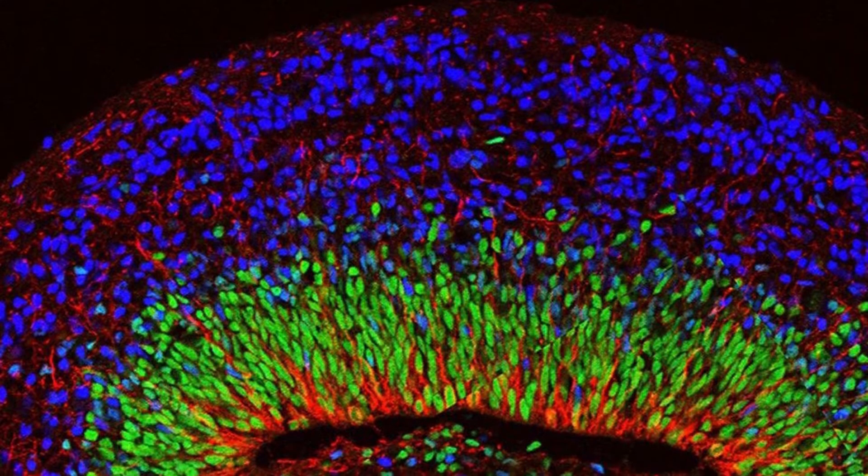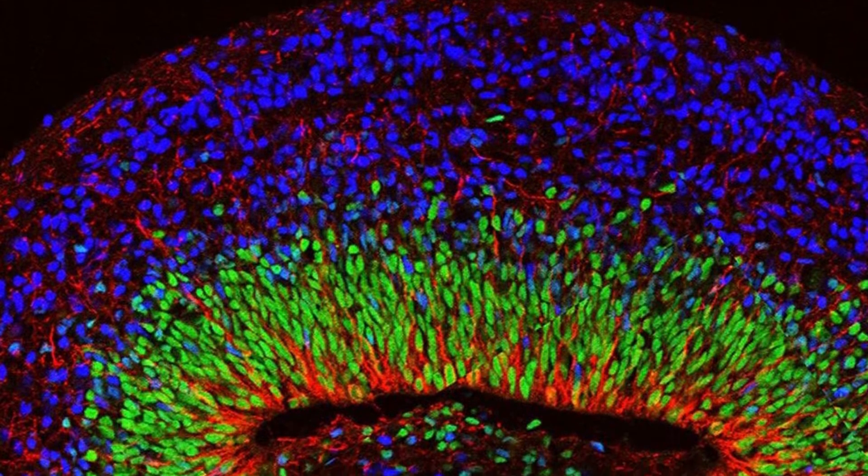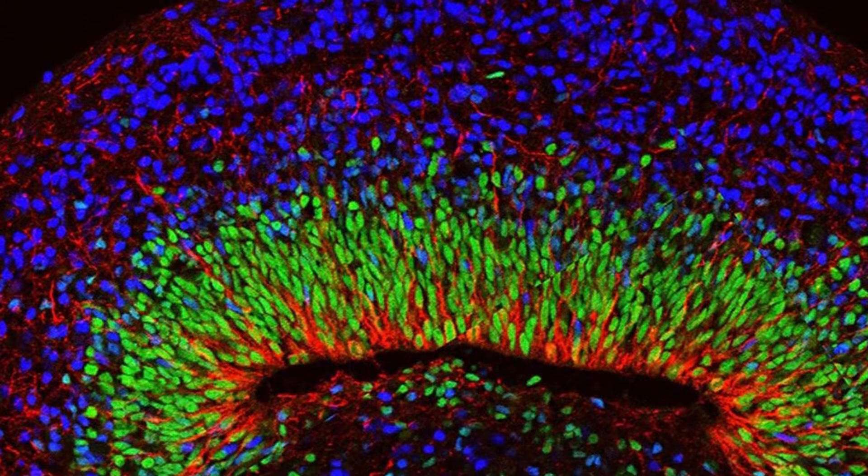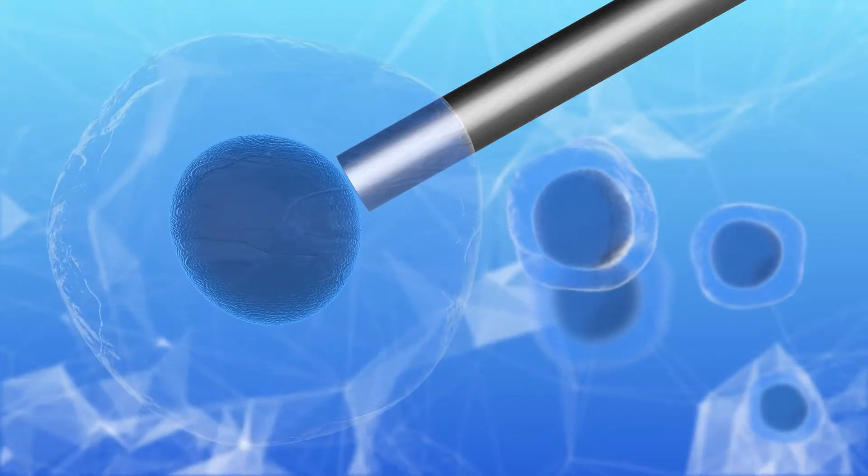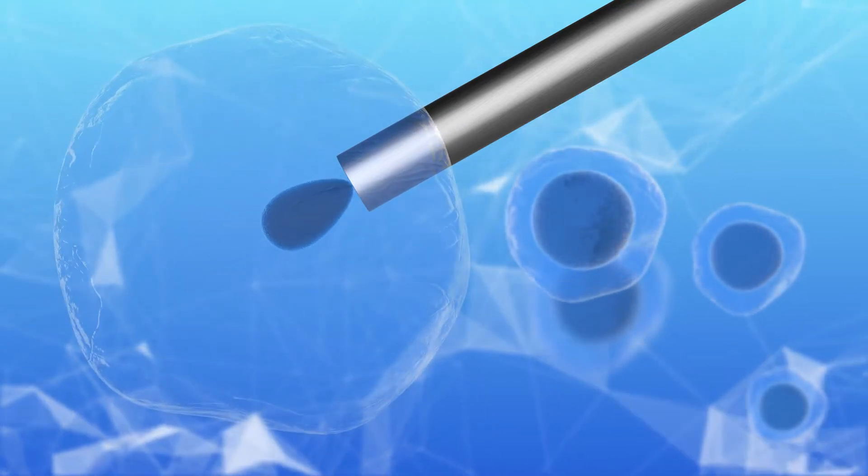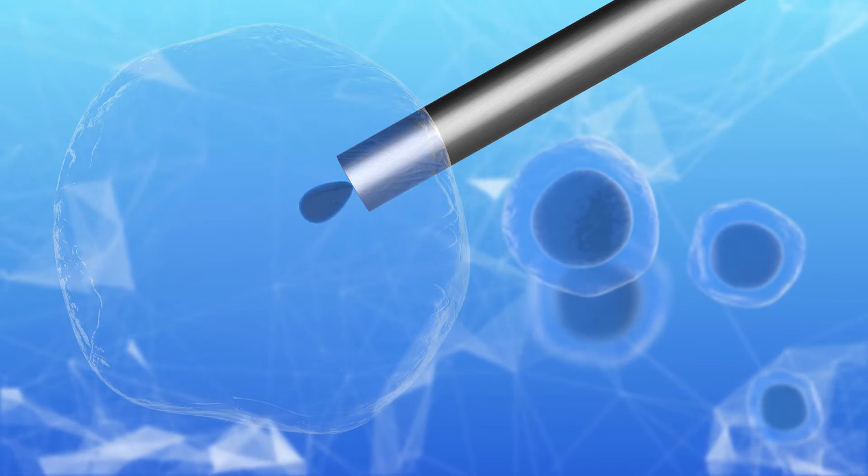Scientists from the University of California detected activity similar to actual brain waves in lab-grown human brain tissue. The artificial brain organoids were developed from stem cells of patients with Rett syndrome, which is a genetic condition that can result in seizures.